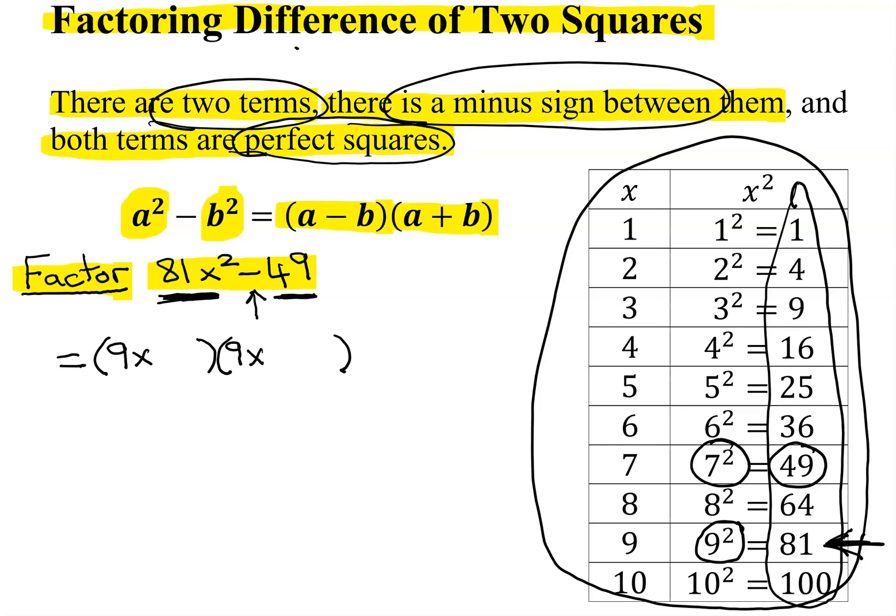The last term comes from the square root of 49, which we can see from here is 7. And we have to have opposite signs in the parentheses. It doesn't matter which one comes first.